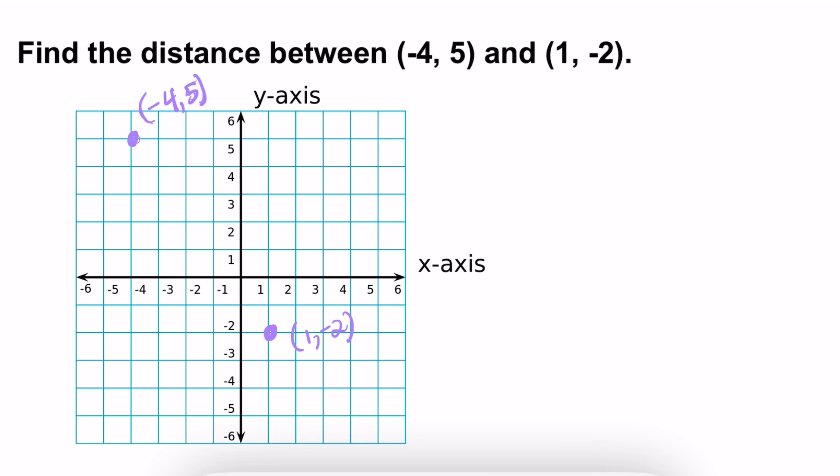So if you notice, hopefully you see that they are diagonal from one another, the two points. So what you would do is basically make a right triangle. So you would come down and then go to the right. Okay, and you have a right triangle. So what you have now, you want to find the distance of the x values and the distance between the y values.